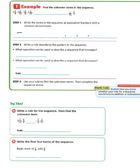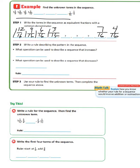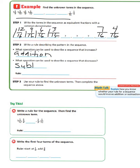We can write each fraction with a denominator of 16 to create equivalent fractions. The next step is to write a rule describing the pattern. What operation describes a sequence that increases? If a sequence increases, we use addition. What operation describes a sequence that decreases? We would use subtraction for a sequence that decreases.